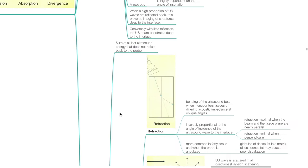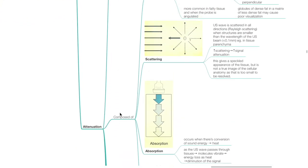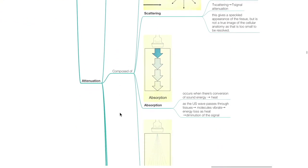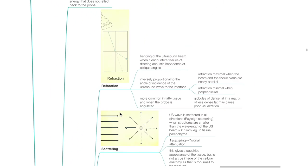Attenuation refers to the sum of all lost ultrasound energy that does not reflect back to the probe, and is composed of refraction, scattering, absorption, and divergence. Refraction is the bending of the ultrasound beam when it encounters tissues of differing acoustic impedance at oblique angles. It is inversely proportional to the angle of incidence. Refraction is maximal when the beam and tissue plane are nearly parallel, and minimal when perpendicular. Refraction is more common in fatty tissue and when the probe is angulated. Globules of dense fat in a matrix of less dense fat may cause poor visualization.